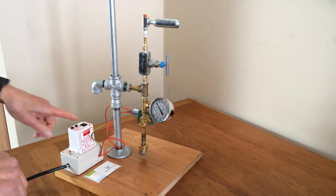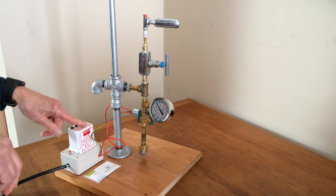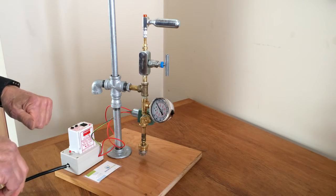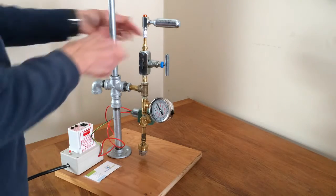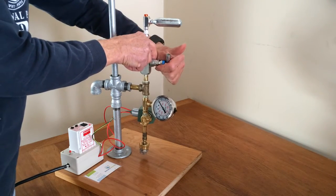You can then adjust the timing of the pulse here with the relay. Right now we have it set to 80 milliseconds, which is what we've been using. And then you can adjust the pressure here by opening the valve and releasing some pressure.